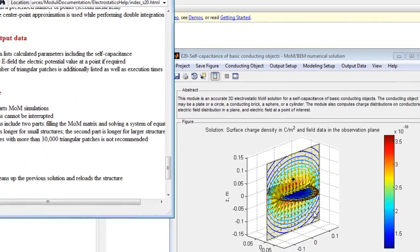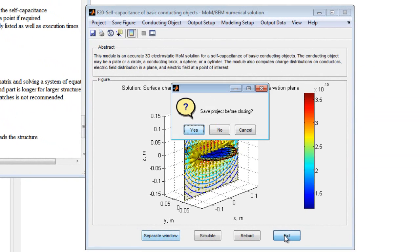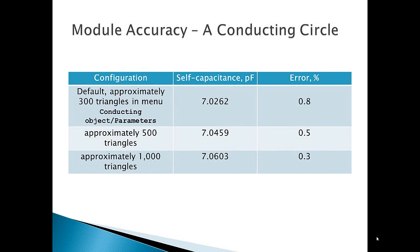When exiting the program, the current configuration can be saved for later use and easily reloaded. Model accuracy is quite good as compared with the analytic solution. As expected, increasing the number of triangles used decreases the relative error.